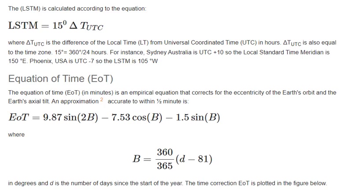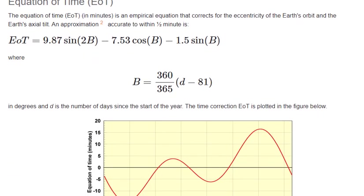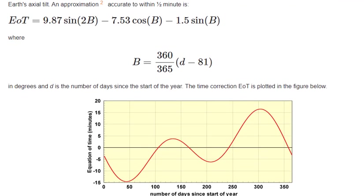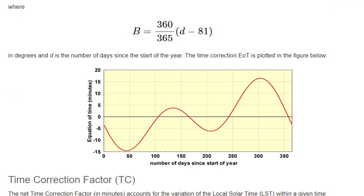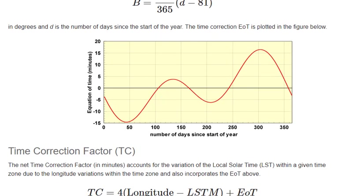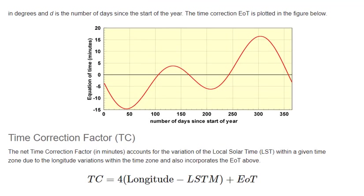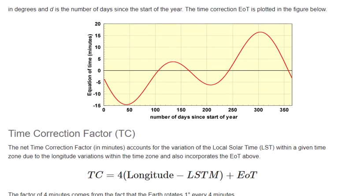Phoenix, USA is UTC−7, so the LSTM is 105 degrees west. The Equation of Time (EOT) is an empirical equation that corrects for the eccentricity of the Earth's orbit and the Earth's axial tilt. An approximation accurate to within one half minute is given, where B in degrees and d is the number of days since the start of the year. The time correction EOT is plotted in the figure below.